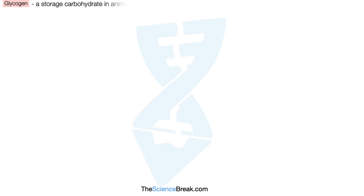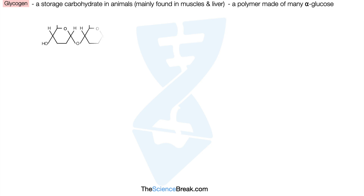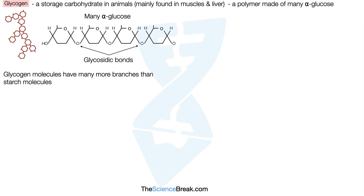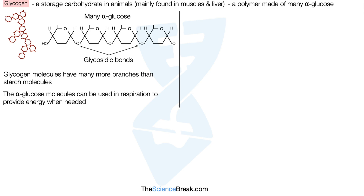Let's take a look at glycogen. This is a storage carbohydrate found in animals, mainly in muscles and liver. It's a polymer made of many alpha glucose molecules, with alpha glucose units joined by glycosidic bonds. Glycogen molecules have many more branches than starch molecules, and the alpha glucose molecules can be used in respiration to provide energy when needed.